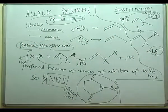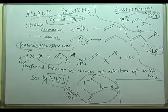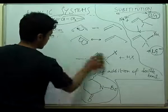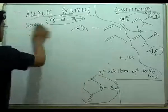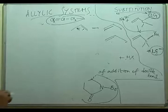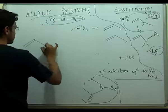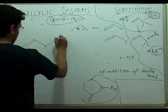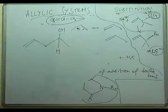These are the general important reactions of allylic systems. One more important reaction is the dehydration which produces dienes or conjugated systems. Suppose for example we have a system like this which is an allylic system.